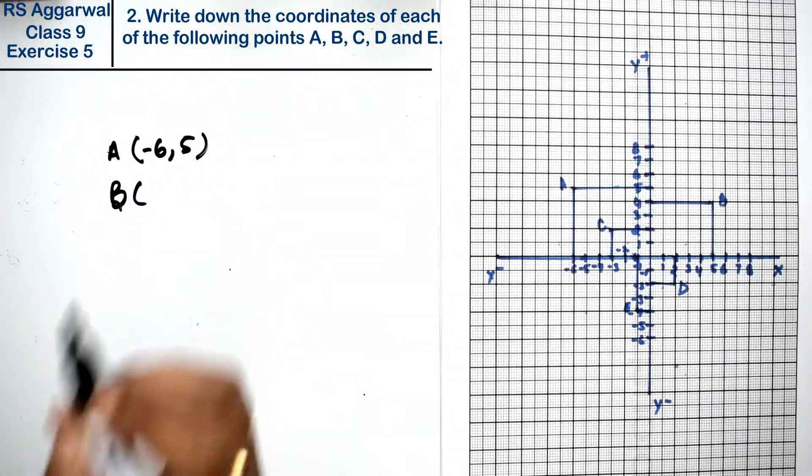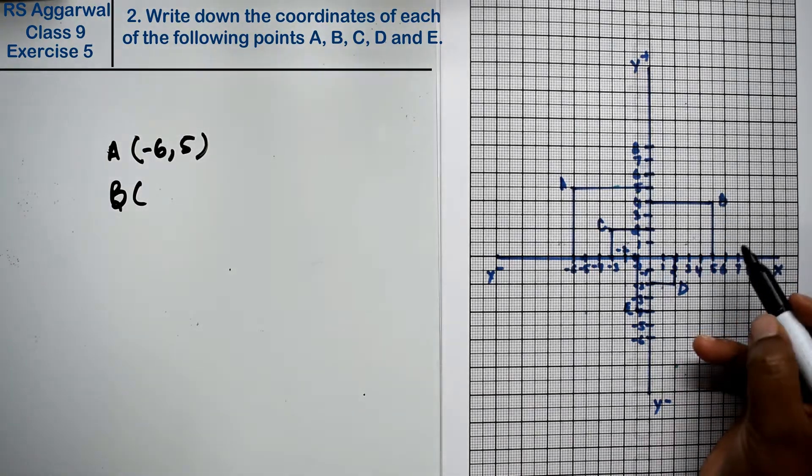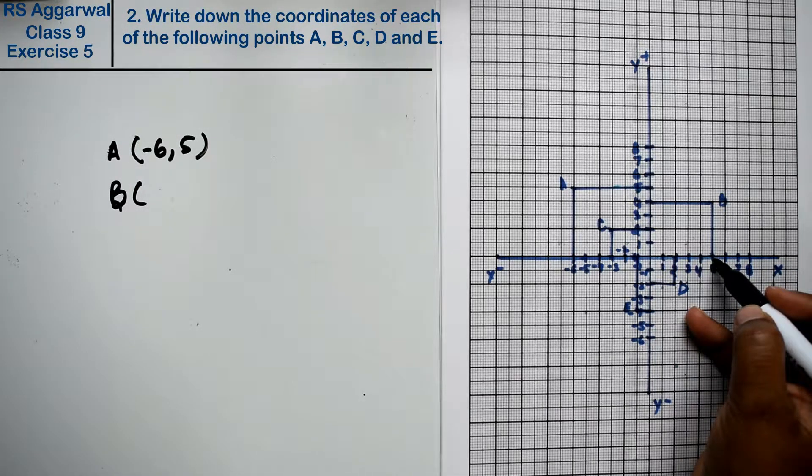Second is B coordinate. Now B, look at X axis, 5 and Y 4. So 5 and 4 right friends.